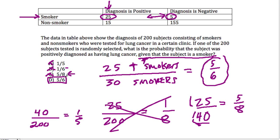We want, given that they are a smoker, the prognosis is that they're positive. It's five-sixths, essentially pretty close to being guaranteed. All right, I hope that helped.